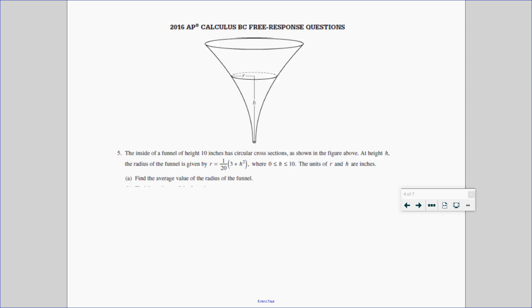We have the inside of a funnel, which has a height of 10 inches and circular cross-sections at a height of h. The radius of the funnel at any given time is given by this problem. That's our radius right here. And they're telling us that this is 1 over 20, 3 plus h squared. That's the radius at any given time.